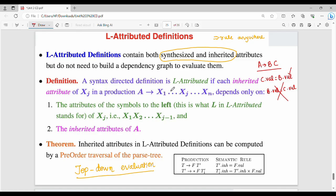A syntax directed definition is L-attributed if each inherited attribute depends only on the attributes of the symbols to the left. In a production A → X1 X2 ... Xj ... Xn, inherited attributes of Xj can depend on attributes to the left (X1, X2, etc.) and on inherited attributes of parent A. This is the main definition of L-attributed.